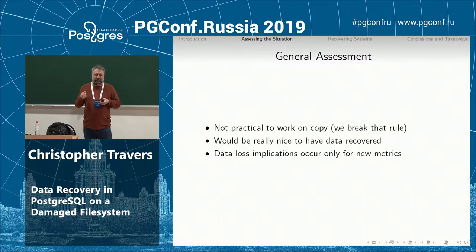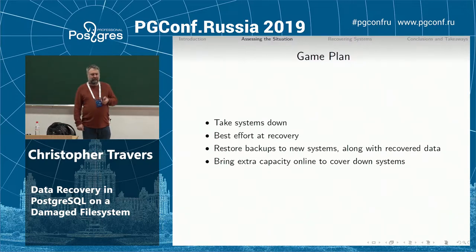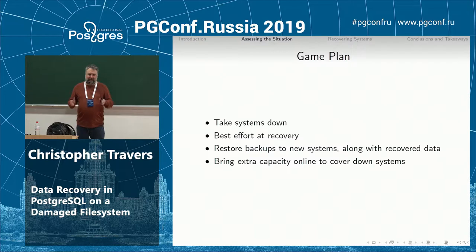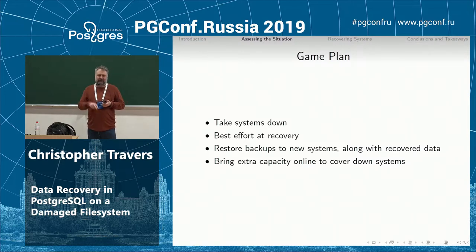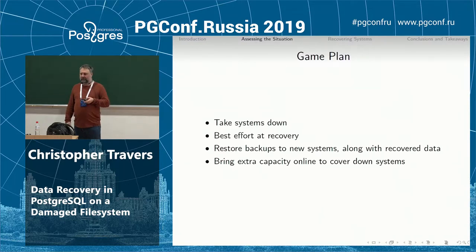Don't do data recovery when you're under too much pressure — we make mistakes, and those mistakes can make things worse until you're in a far worse situation than where you started. Here's the game plan: systems are down, we run fsck, do a best-effort recovery, then restore backups except for the SSD data. We ordered four new systems — two to replace the down systems, two as extra capacity. We went from 24 systems online before the incident to 26 online while doing the actual recovery.